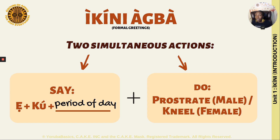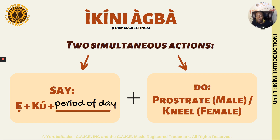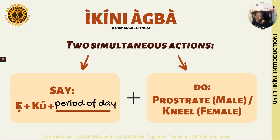So what is involved in greeting an elderly person in Yoruba? There are two things you have to keep in mind. The first thing is what you say, and then the second thing is what you have to do. You have to do those two things at the same time. It's very similar to English where, with someone older or more formal, you might say 'good morning' while shaking their hand — you're saying something and doing something. In Yoruba, you say something and then you do something.